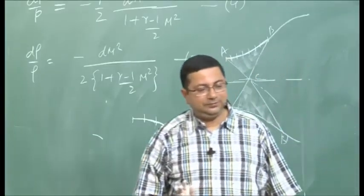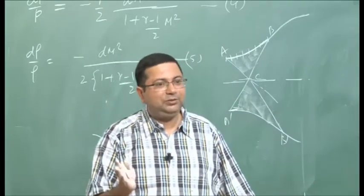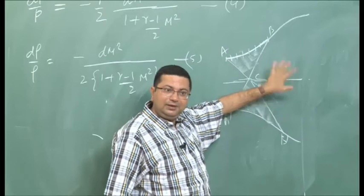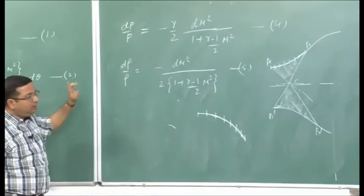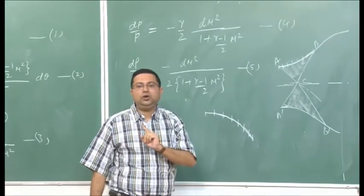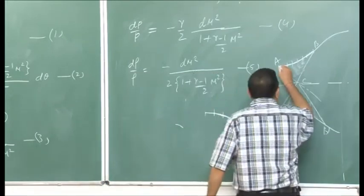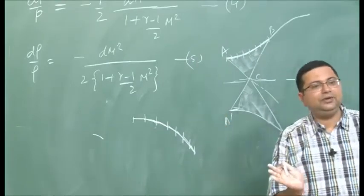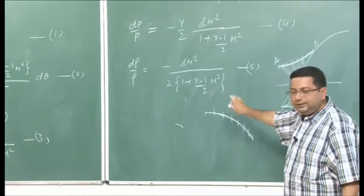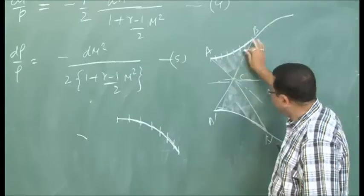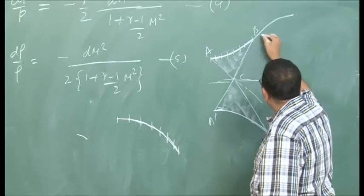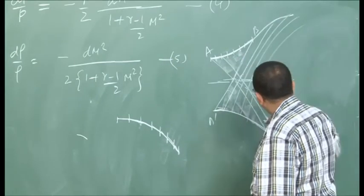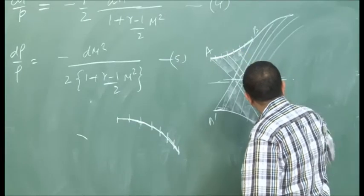Going back to our original nozzle drawing: we are focusing on the region where only a single type of Mach line is present — either the left-running or the right-running family alone. In these single-family zones, knowing the wall curvature is sufficient to determine all the property variations in the interior. The initial curvature of this section is specified (not yet designed), and from it we get all the property variations. This is the first part of the problem — handling regions with only one type of Mach line.